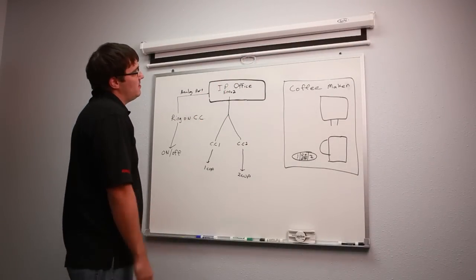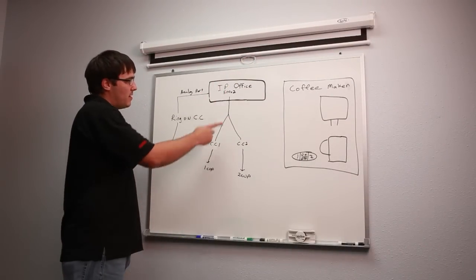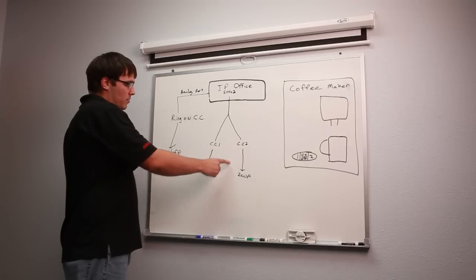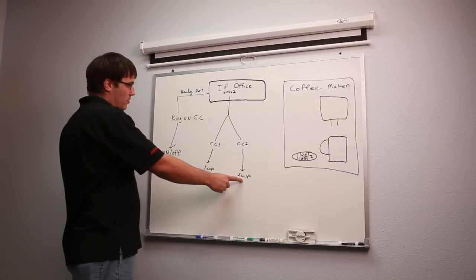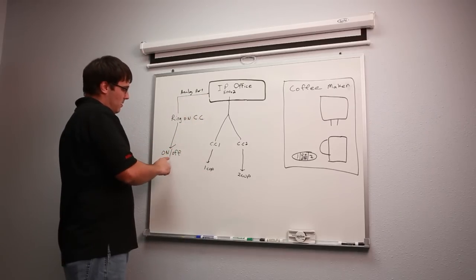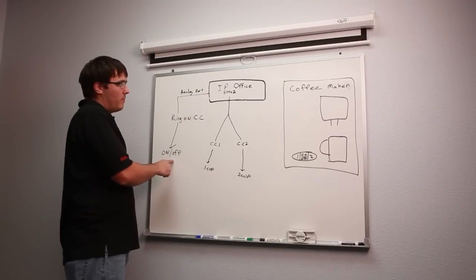A little bit behind the scenes, we have an IP Office 500 V2 with a contact closure on the back. Contact closure 1 and 2, which we wired to 1 cup to 2 cup. We also have an analog port that ringed on contact, which activated the on-off on the coffee maker.